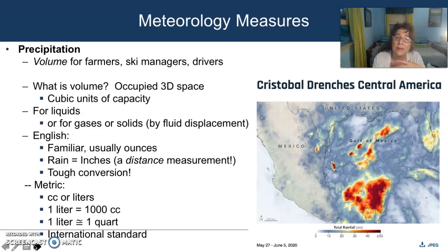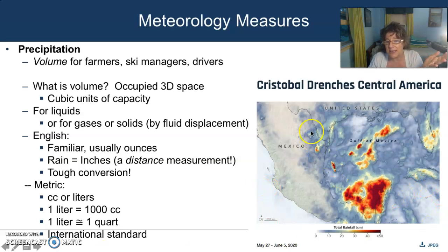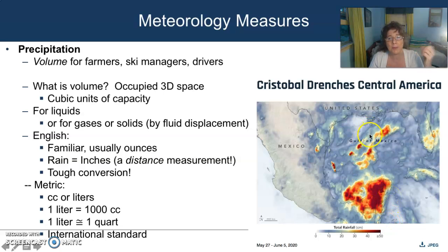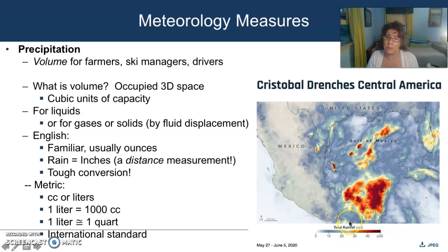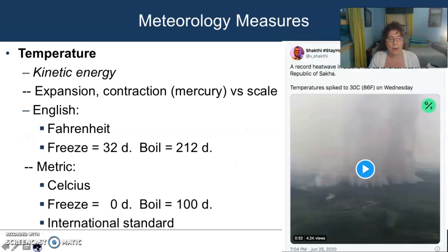One liter is about a quart, and two liters is about a half gallon — and it is the international standard. In this representation, you're seeing Mexico and the southern United States, and the rainfall totals from tropical storm Cristobal, which came through about three weeks ago. The rainfall totals are measured in centimeters here, though I'd rather they were measured in cubic centimeters. But you see the confusion that happens as a result of some of these measurements. We are going to work on measuring really well so that you become confident about your measures in meteorology.